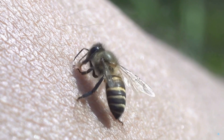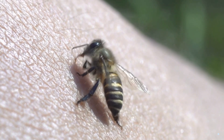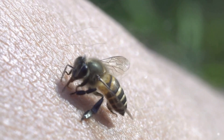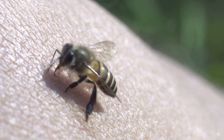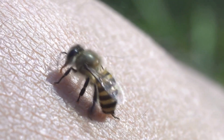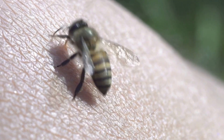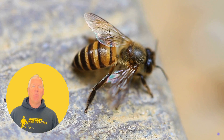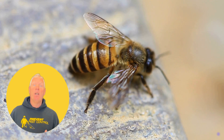Are sweat bees attracted to human sweat? Yes, they are. Sweat bees are small, often metallic colored bees that are attracted to the salt in human sweat. They're generally not aggressive but they might give a mild sting if provoked. You'll commonly see them during the summer months.